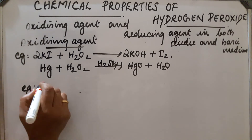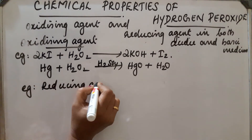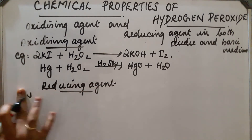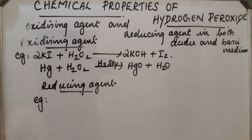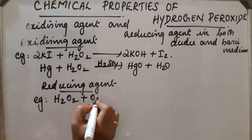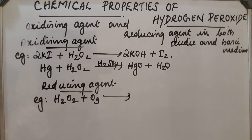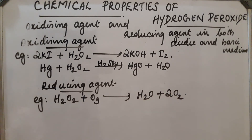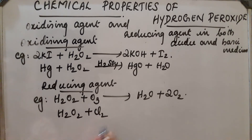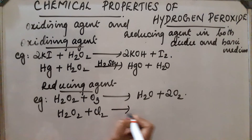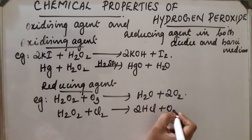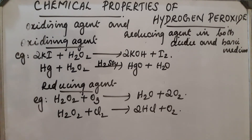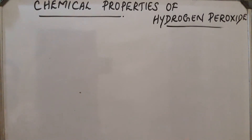Next case — H₂O₂ acts as a reducing agent. Example: H₂O₂ with ozone (O₃): H₂O₂ acts as a reducing agent, giving H₂O plus 2 O₂ (oxygen gas is liberated). Another example: with chlorine gas, H₂O₂ also acts as a reducing agent, giving 2 HCl plus O₂.